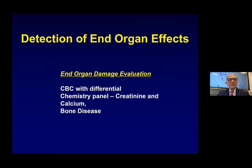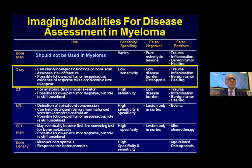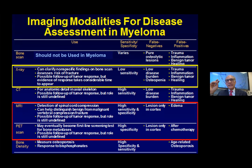How do we detect this end organ damage? We do blood tests to look at blood counts to see if there's anemia, and chemistry to see if the patient has a kidney problem or if calcium is high. For bone disease, we need imaging studies. We do not do bone scan in the traditional way. We still do plain x-rays — called skeletal survey — but it has low sensitivity. In the modern world, we perform whole body MRI or PET scan, which are more common and have high sensitivity and specificity, and they diagnose the disease very clearly.